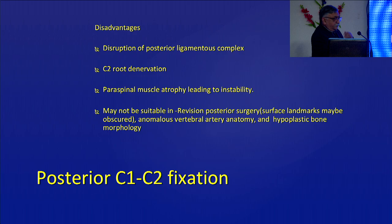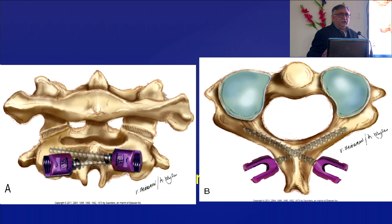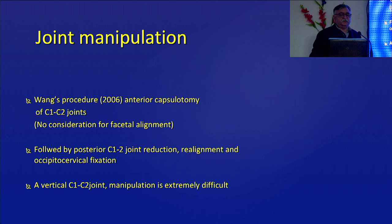The advantages and disadvantages of the Goel-Harms procedure: you do disrupt the ligament complex and must remove everything to visualize the joint. The C2 roots can sometimes get damaged or may need to be cut. There can be significant bleeding from the veins. The anatomy is difficult, so there is a learning curve. Even if the pars is a problem, you can use the lamina for the C2 screw, and you can still achieve C1-C2 fixation.